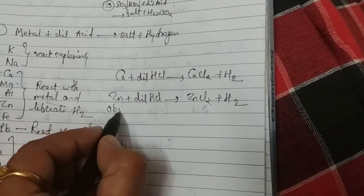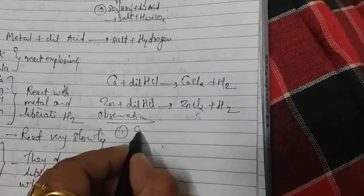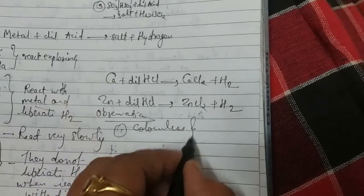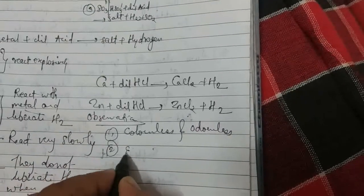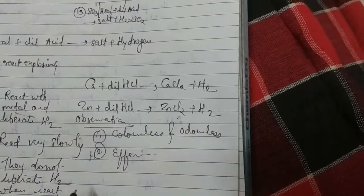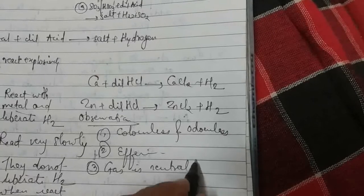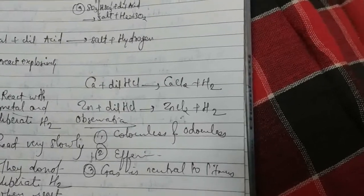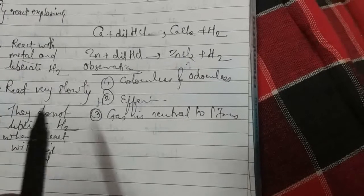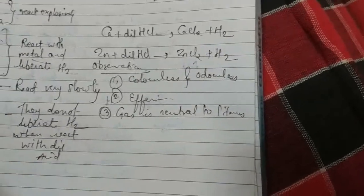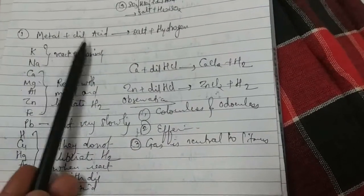The observations are as follows: first, the gas which evolves is colorless and odorless. We also observe effervescence — some bubbles come out. The gas is neutral to litmus, meaning if this gas comes into contact with litmus paper, the litmus paper remains neutral. This completes the first general reaction.